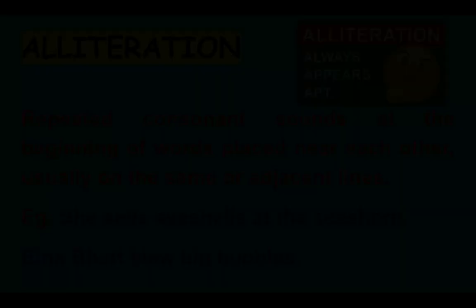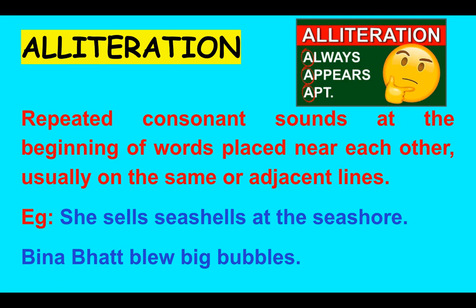Let's move to another poetic device — alliteration. Dear students, in simple words, alliteration means that in a sentence, if twice or more than two times consonant sound words are used, then that sentence becomes an example of alliteration. A-E-I-O-U are vowels in the English language and all other alphabets are consonants. But make sure you check the sound and not the alphabet.